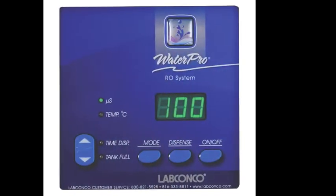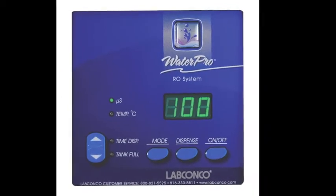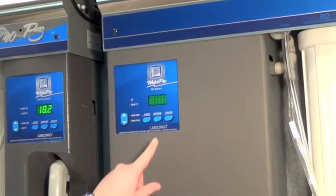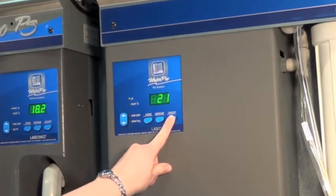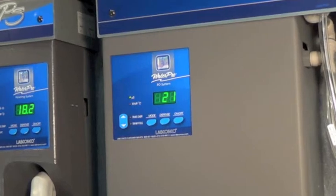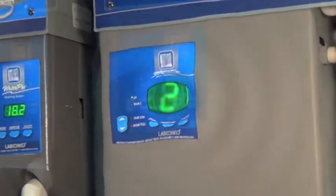Operation of the WaterPro RO is controlled via the display board. The on-off button turns on the unit and lights the display. When the switch is in the on position, the pump will automatically flush for three minutes after every 12 hours of inactivity.